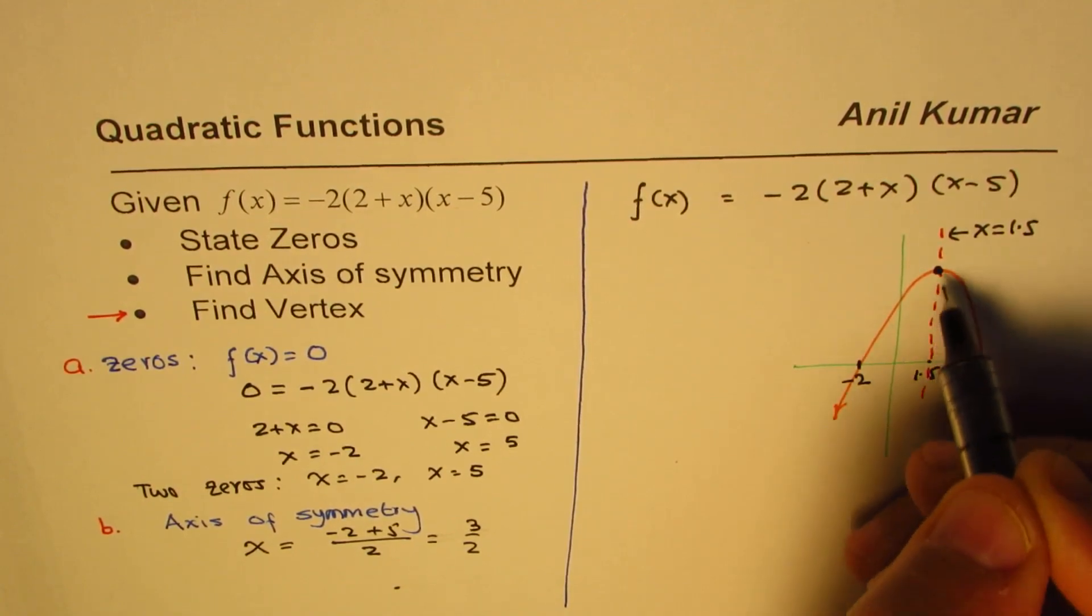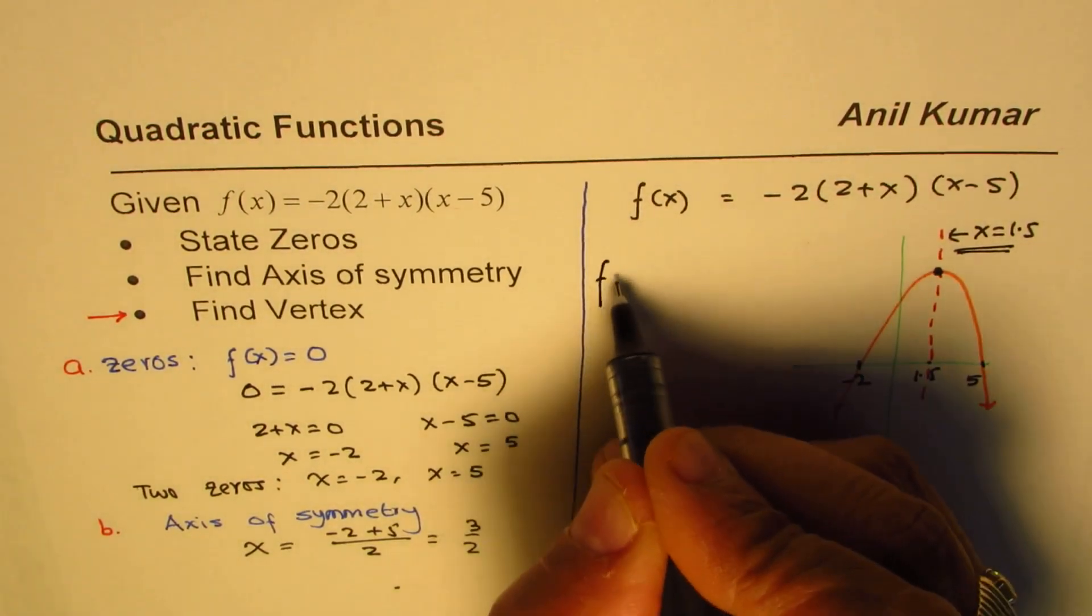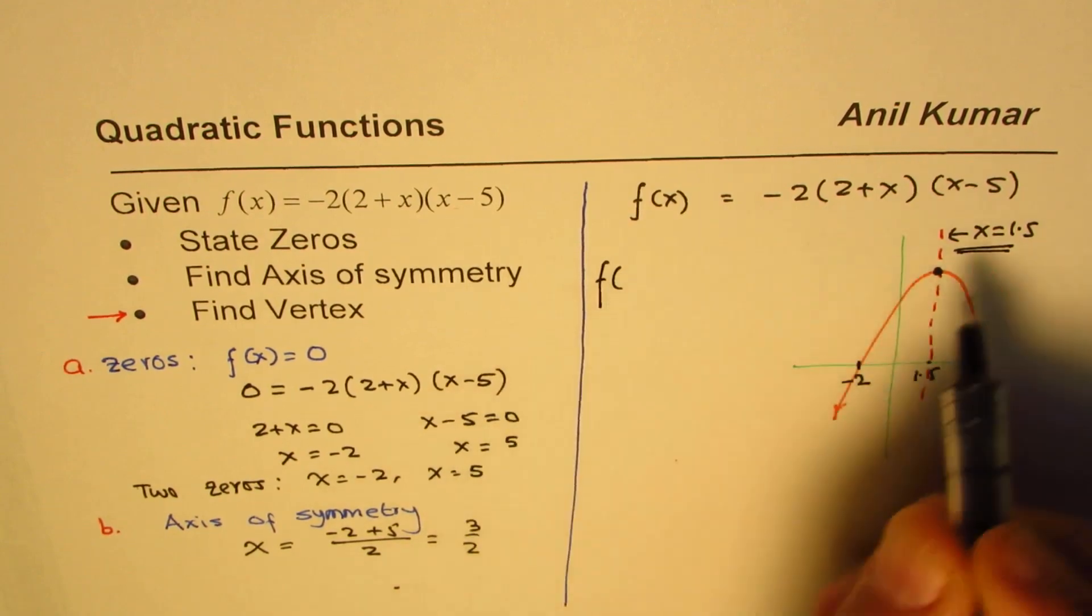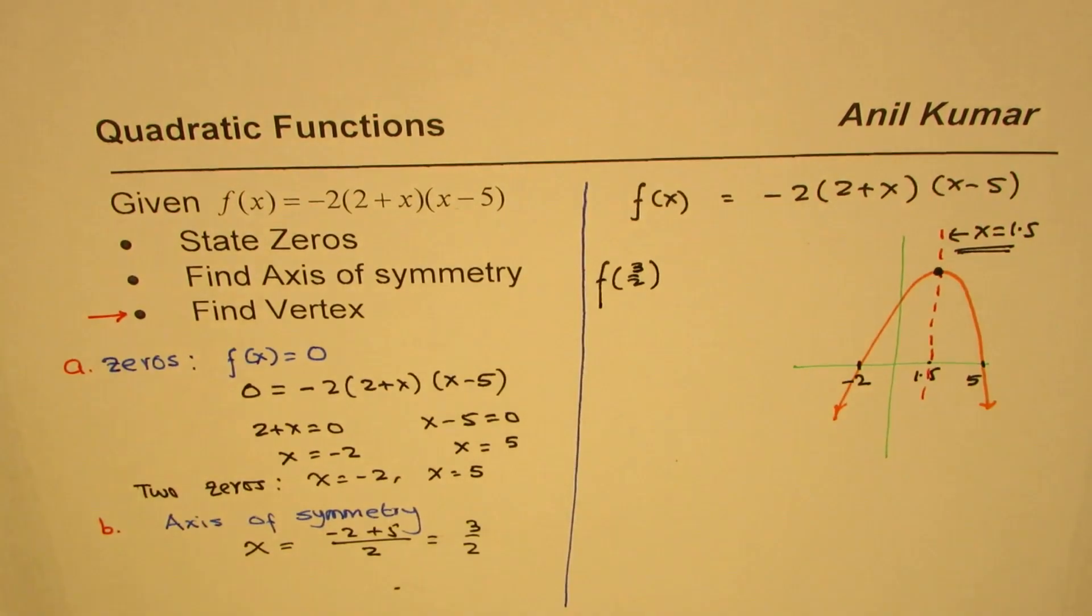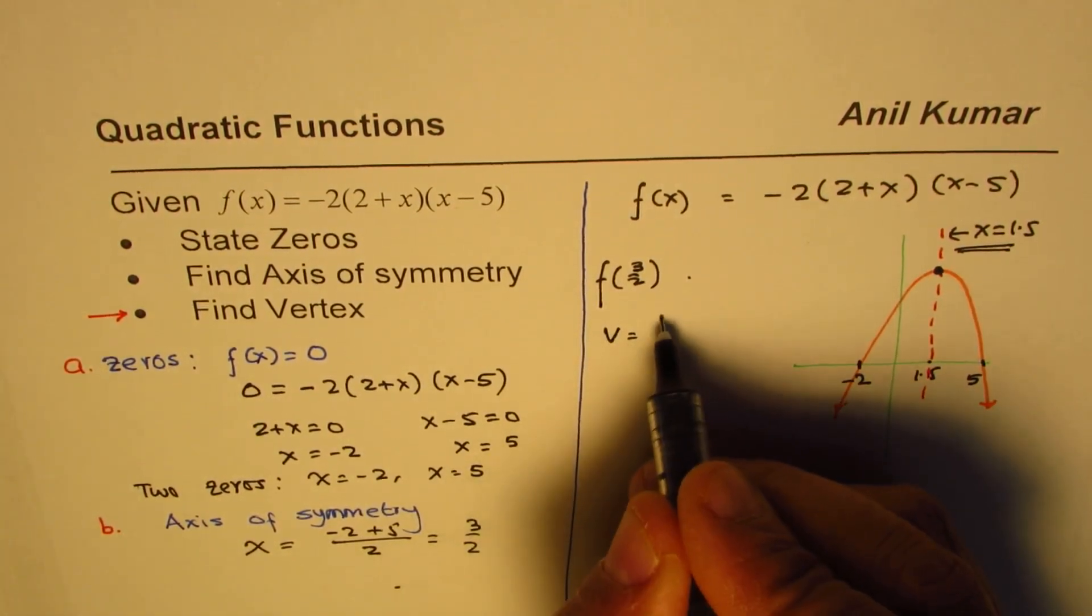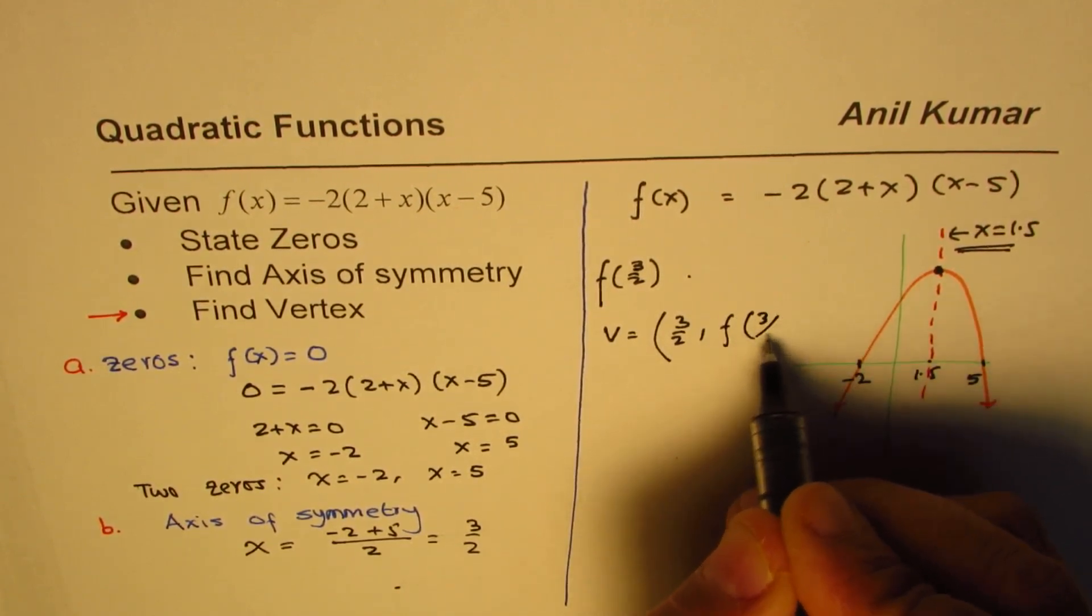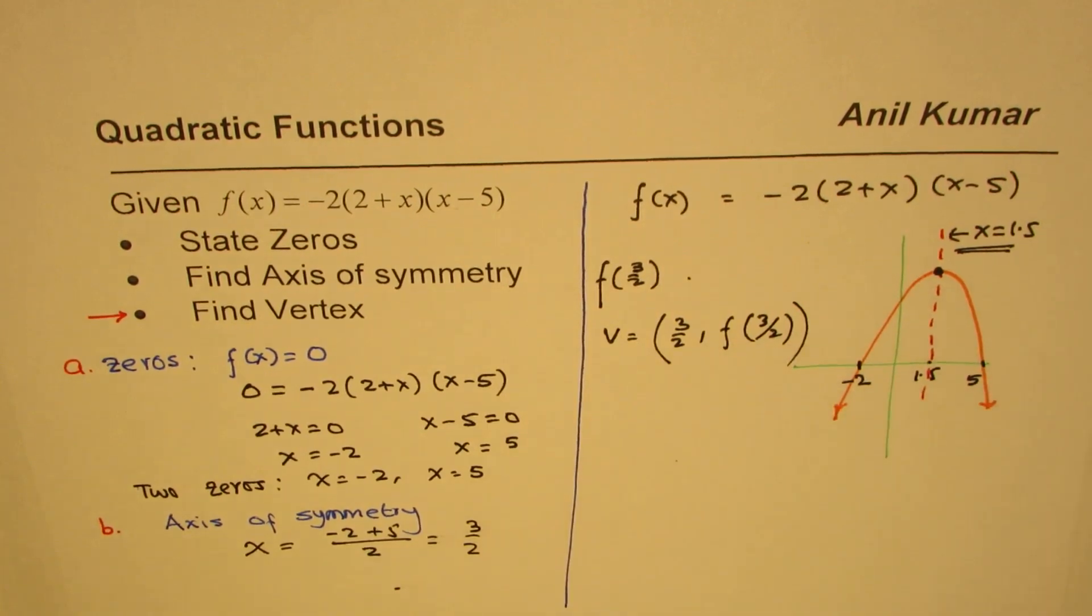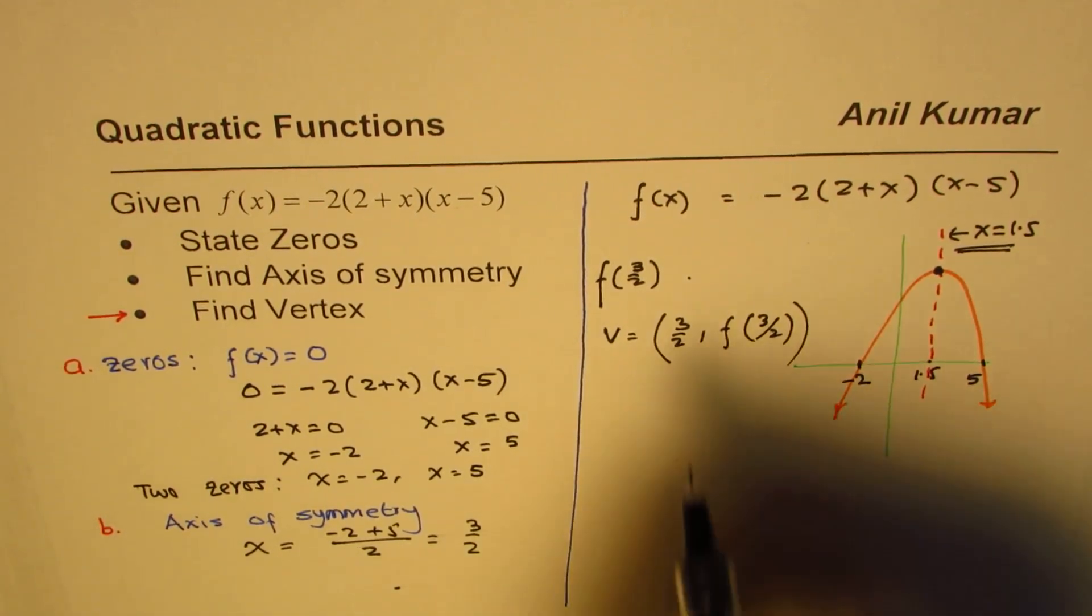Where is the vertex? Vertex is on the axis of symmetry. Therefore we already know the x value of the vertex. To find the y value, we have to find the value of the function at 3/2. Vertex is basically (3/2, f(3/2)). That is what I want to make you understand. So you can now pause the video, find the vertex, and then check with my solution.